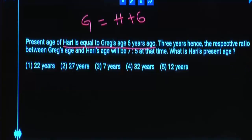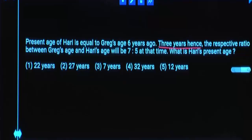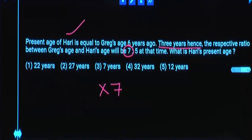3 years hence, ratio is given as 7 is to 5. After 3 years, Greg's age will be a 7 multiple. So to get present age of Greg, you need to subtract 3 years. And Hari's age is 6 years less than Greg. So from this you can say Hari's age is equal to 7 multiple minus 9.